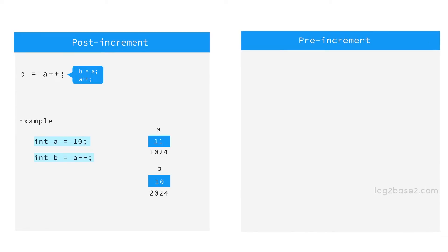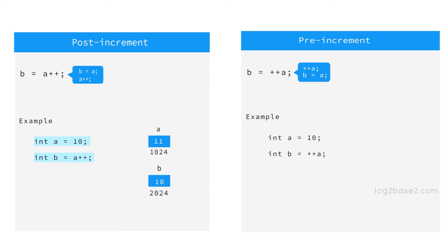Now let us see the pre-increment operation. Here the order of operation is just the opposite — first the value will be incremented and then only it is returned. See this expression: b equal to plus plus a. First this increment operation will take place and then only the value is returned. Let a equal to 10 and we have b equal to plus plus a. So firstly, a will be incremented and it will become 11, and now it is assigned to b.